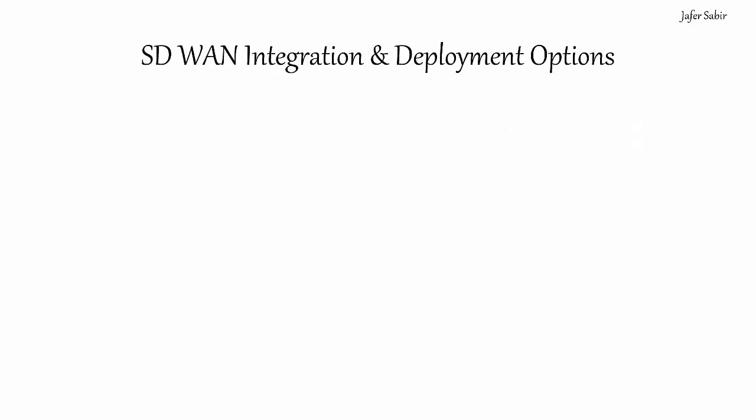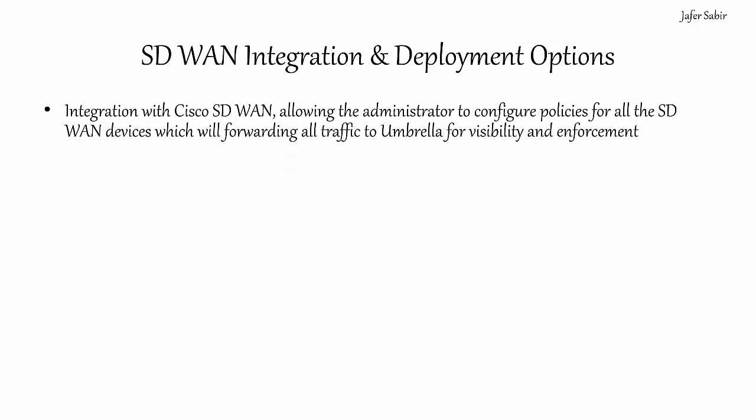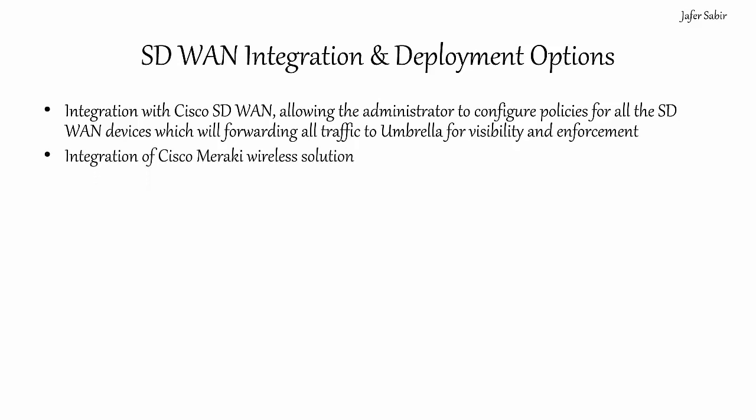Next, we will have a look at SD-WAN integration and deployment options. The Umbrella solution integrates with Cisco's SD-WAN platform by utilizing direct internet access breaking out of local branch offices. You would integrate vManage, which is Cisco's SD-WAN management platform, within the Umbrella dashboard — this allows you to configure policies for all your SD-WAN devices to forward traffic to Umbrella for visibility and enforcement. The Cisco Meraki wireless solution and Meraki MX also integrate with Umbrella, and you can set up policies directly from the Meraki dashboard.